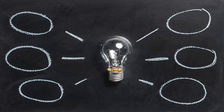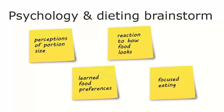Once you have one or two possibilities, sit down and brainstorm to come up with some specific ideas for that topic. Here's an example of a brainstorming session on psychological factors involved in dieting. Some ideas include how people view portion size, how they react to visual cues of how food looks, how people learn which foods they like, and the impacts of distraction or focus while eating.